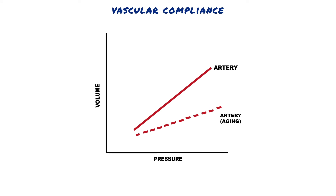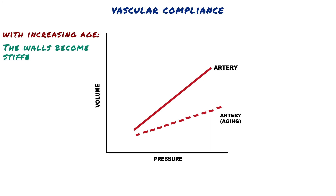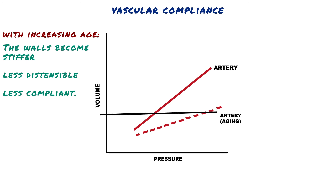This figure illustrates the effect of ageing on compliance of the arteries. The characteristics of the arterial walls change with increasing age — the walls become stiffer, less distensible, and less compliant. At a given arterial pressure, the arteries can hold less blood. Another way to think of decreased compliance with ageing is that for an old artery to hold the same volume as a young artery, the pressure must be higher. Indeed, arterial pressures are increased in the elderly due to decreased arterial compliance.